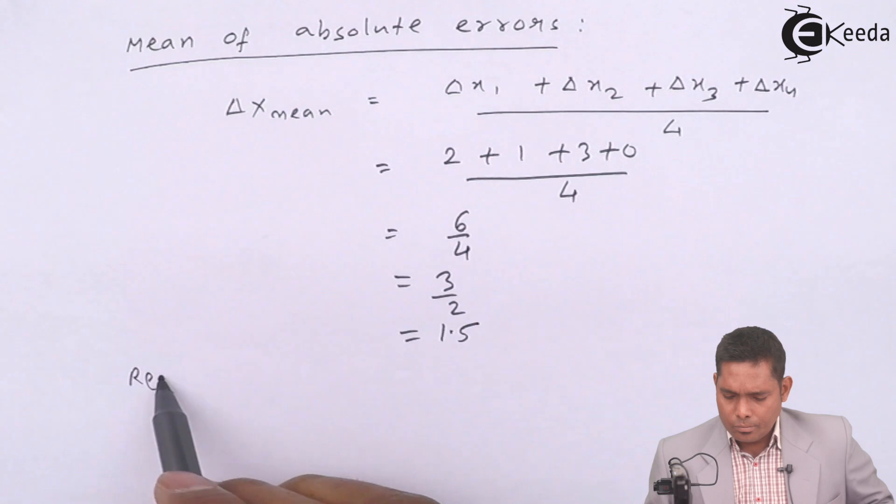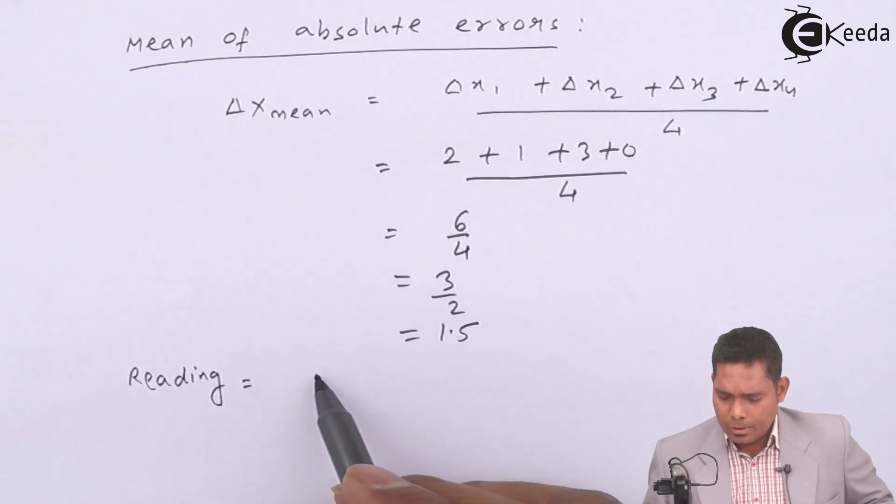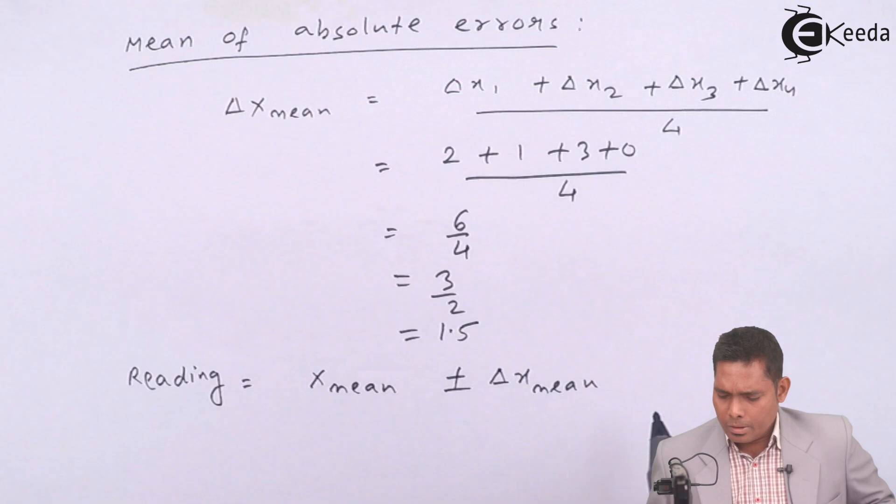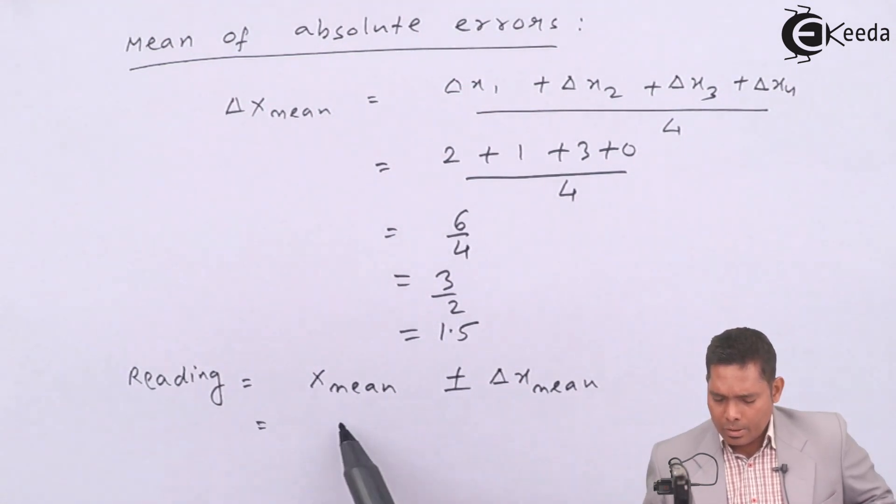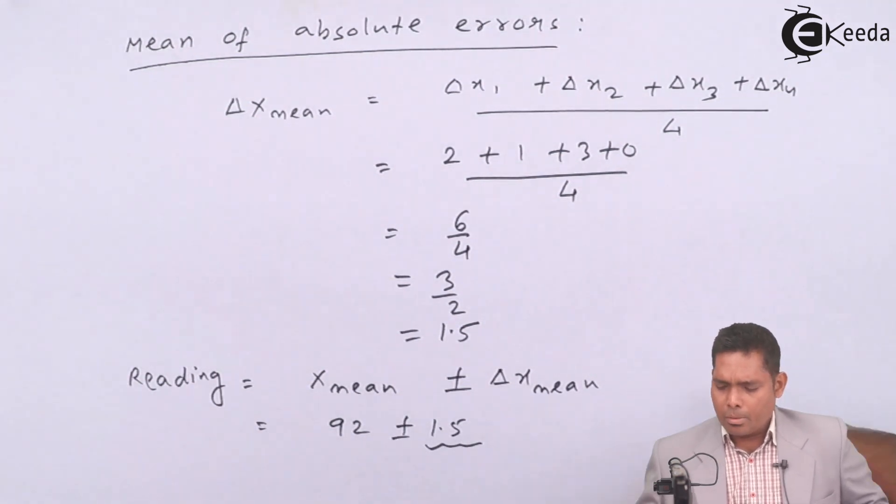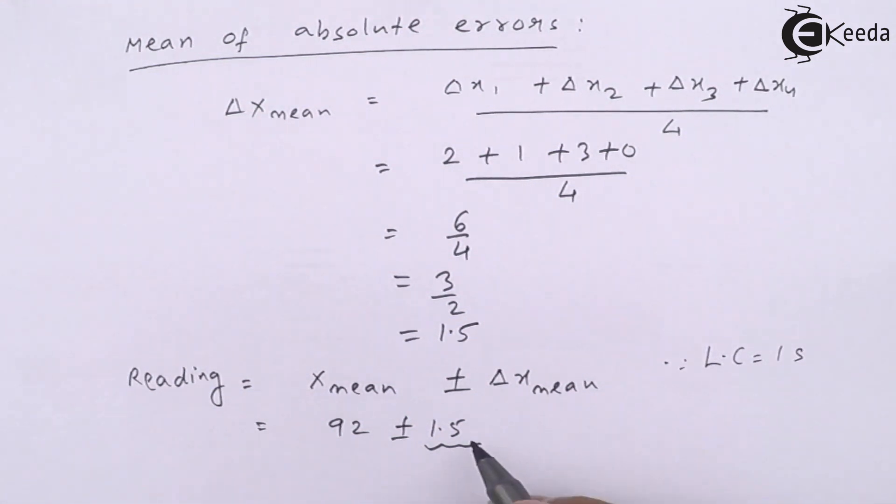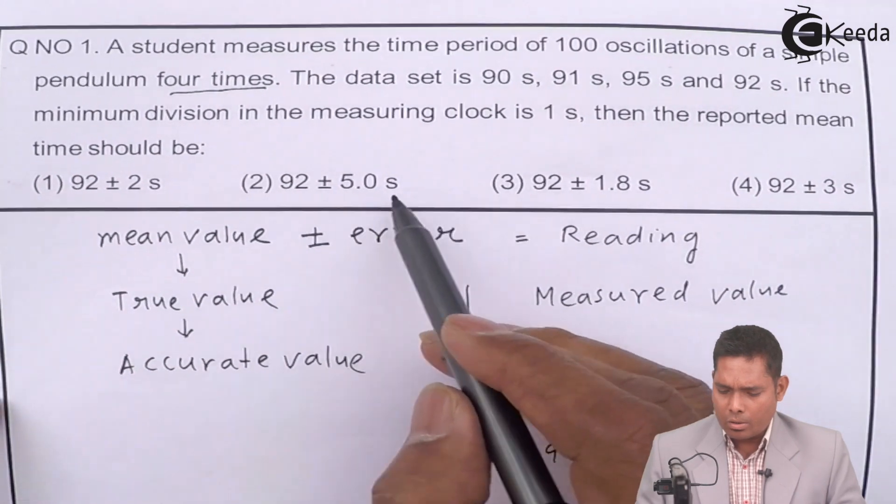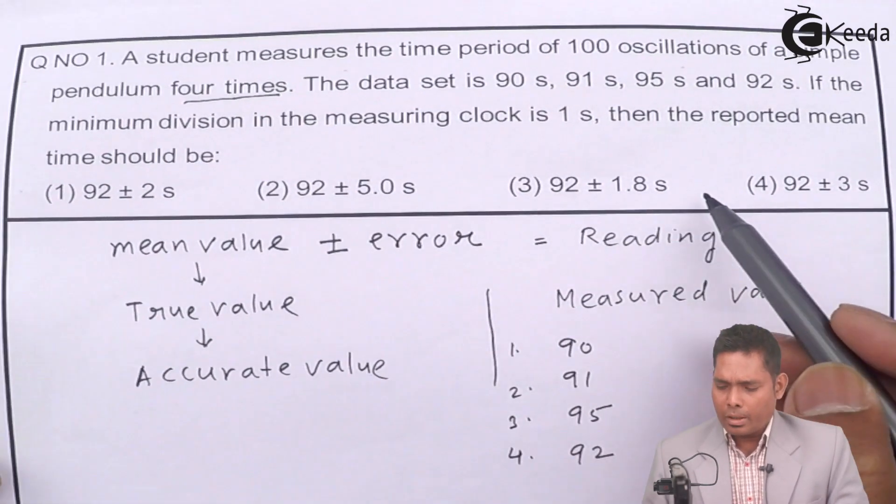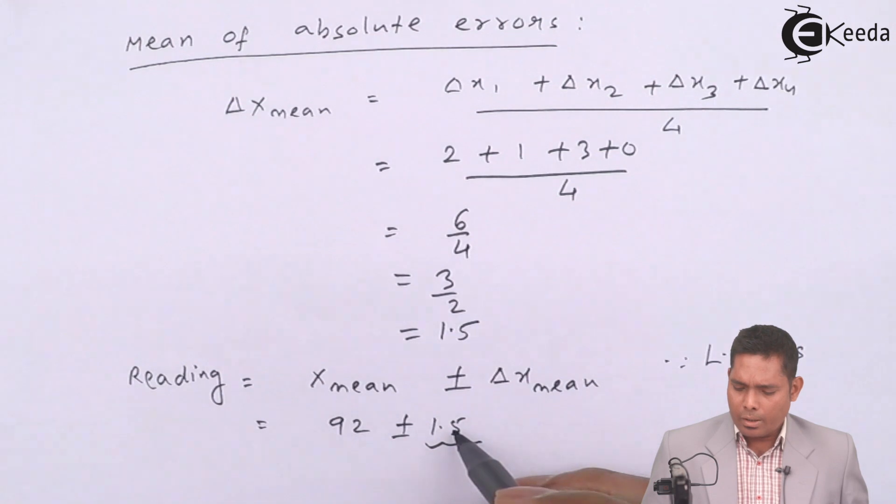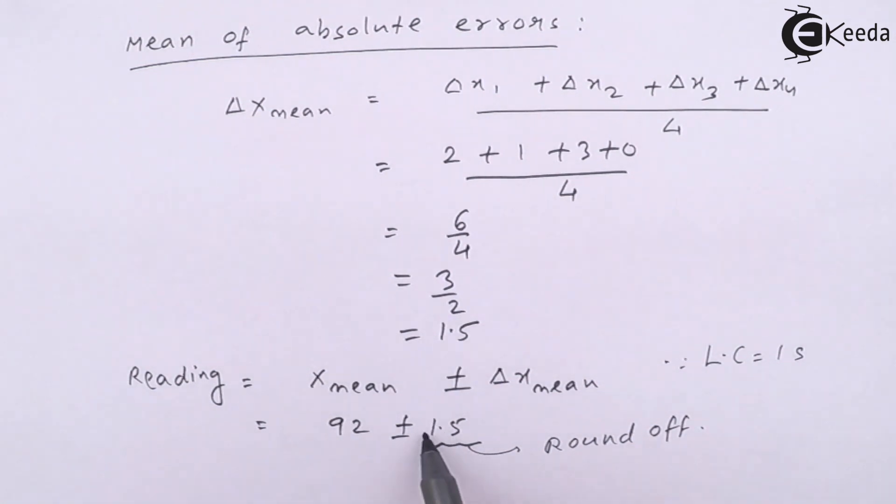So this, the reading is X mean, X mean plus minus delta X mean. That means I should write X mean, I got 92 plus minus 1.5. But then we cannot write like this 1.5 because the least count is 1 second. So in whole number you will write. In whole number means, as you can see the options, these are not possible. This fraction is not possible. You will take less than, you can take 1 here or you can take 2 here because it is 5. And if I round up this, round up, then this should be even because it is odd.